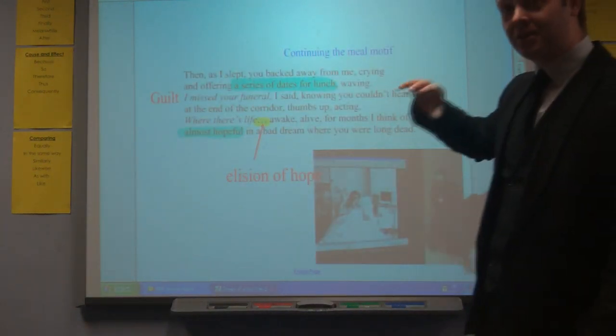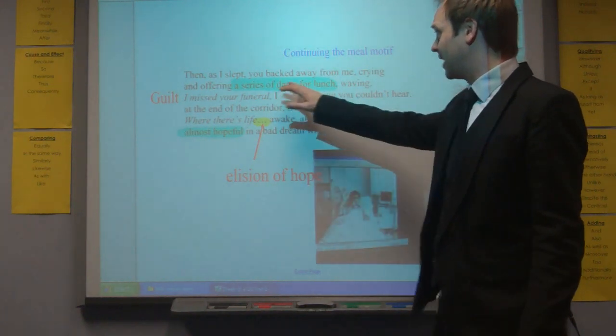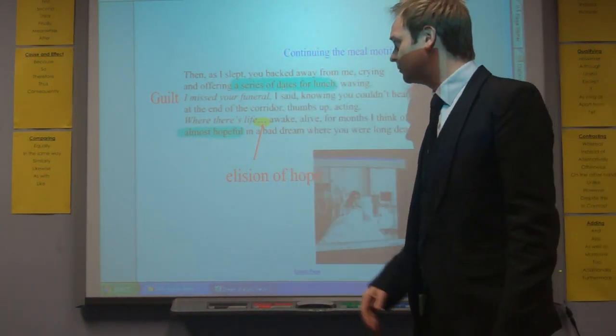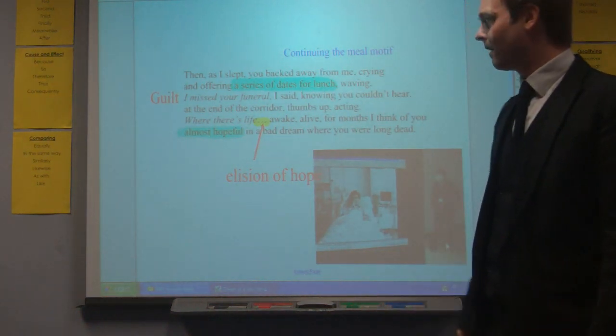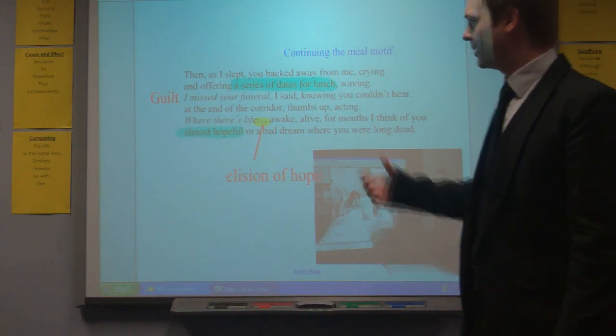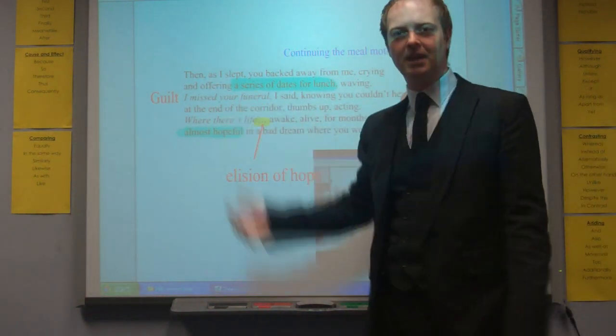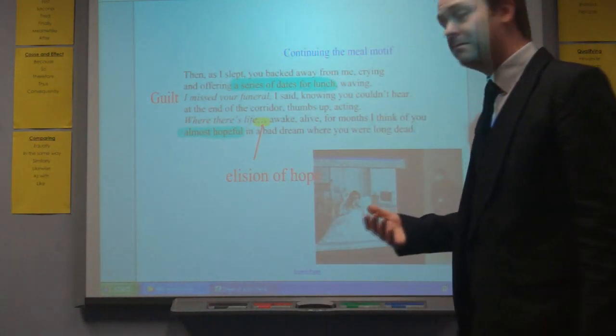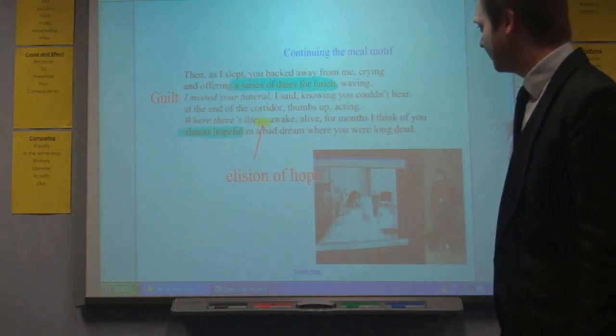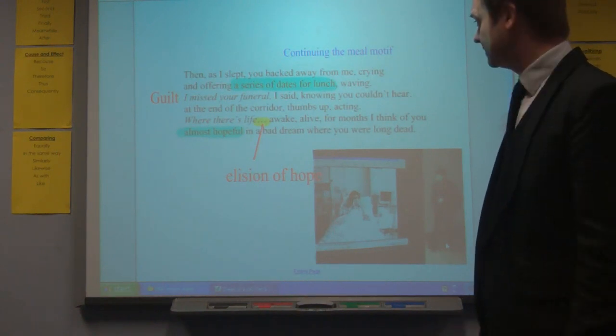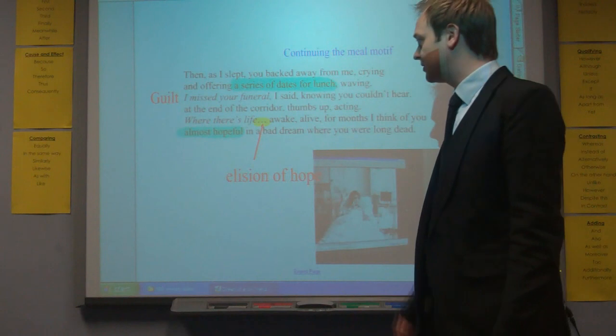The meal motif continues into the final stanza. Then as I slept she backed away from me, crying and offering a series of dates for lunch, waving. I missed your funeral. There's a poignancy there in the sense that the poetic voice now is articulating the kind of guilt that we've maybe suspected over the course of the poem. I missed your funeral. She wasn't able to be there. I said no, you couldn't hear. At the end of the corridor, thumbs up, acting. The person is putting on a brave face.